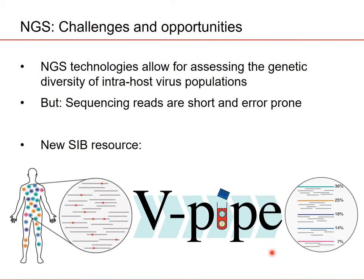We have designed a new resource at the SIB called vPipe. vPipe is a pipeline where we start with a next generation sequencing sample obtained from a virus population derived from one individual patient. There are a number of computational steps in this pipeline, and the result is a reconstruction of the virus population originally present — an estimate of the virus population that can entail the complete composition of viral genomes and their frequencies in the host organism.